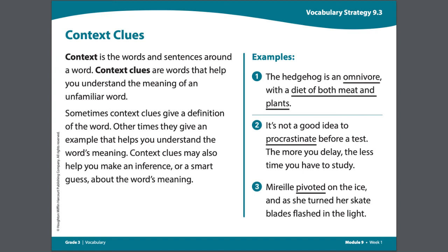Now let's read the third example. Muriel pivoted on the ice, and as she turned, her skate blades flashed in the light. Now it's your turn to search the sentence for context clues. Pause the video and work through this sentence in order to make your best guess or inference as to what the word pivoted could mean.